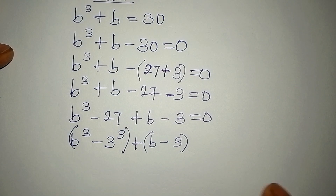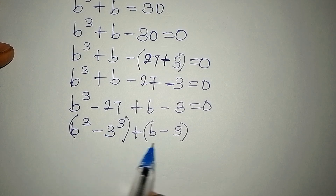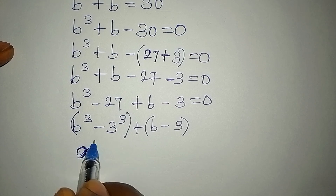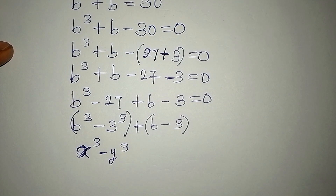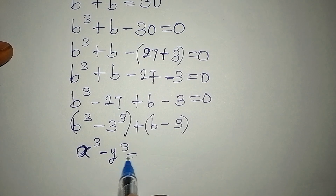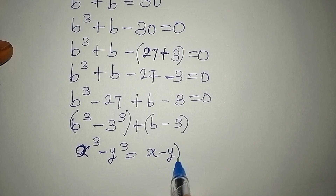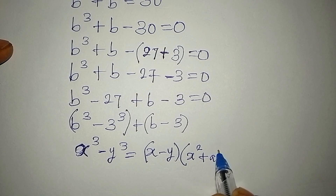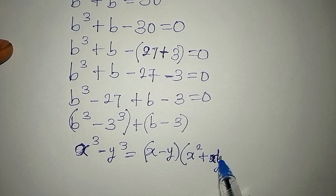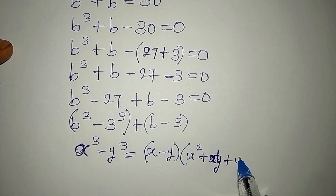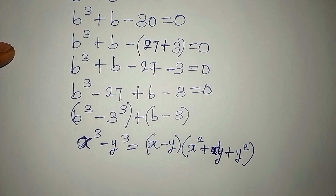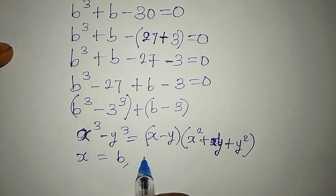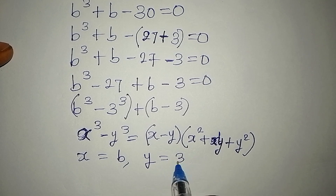Let's deal with each part separately. Using the difference of cubes identity: x³ minus y³ equals (x minus y)(x² + xy + y²). We apply this with x equal to b and y equal to 3.